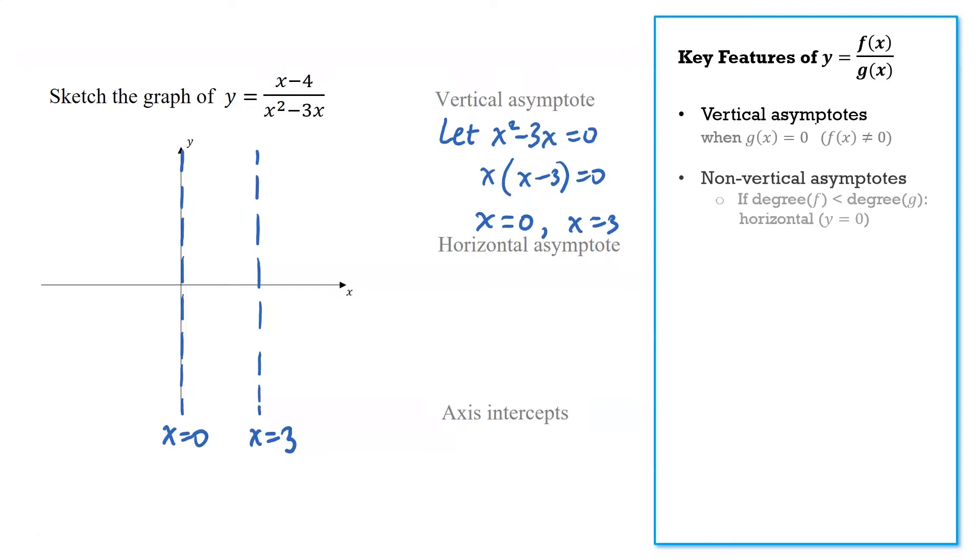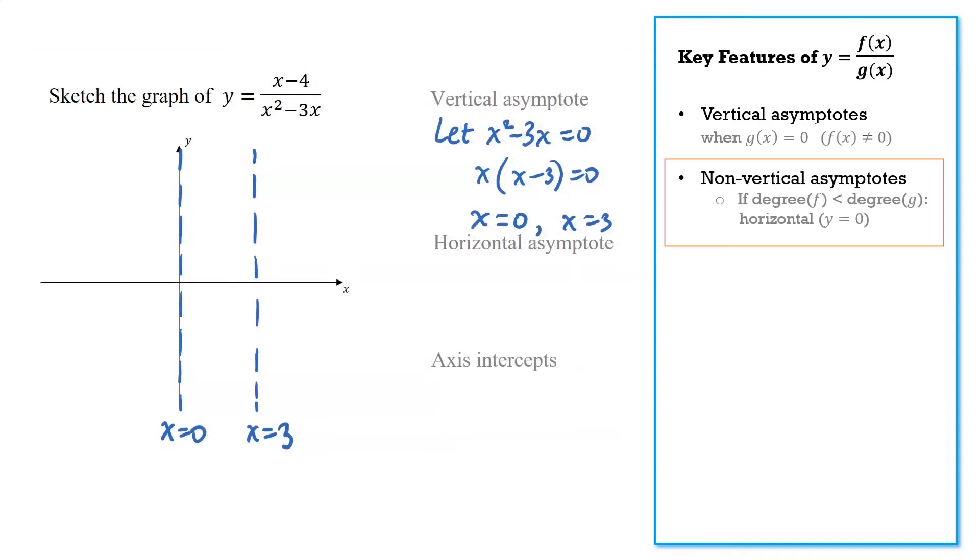Now with the other asymptotes, because here the degree of the top is less than the degree of the bottom, as x gets really large the whole thing is going to approach 0. So we get an asymptote at y equals 0. In the next example we'll look at the case where the degree of f is larger than the degree of g. In that case we need to do a little bit more work to find that non-vertical asymptote.